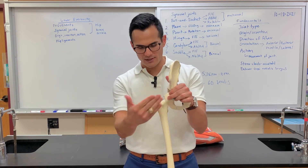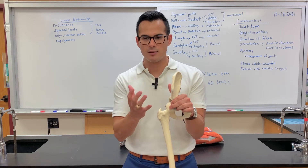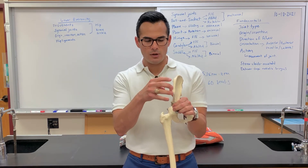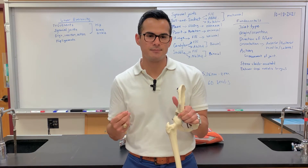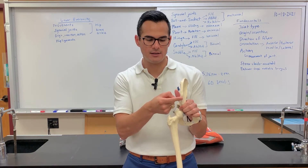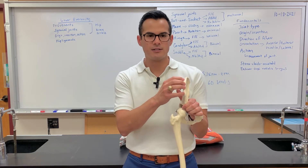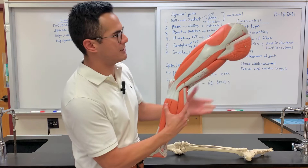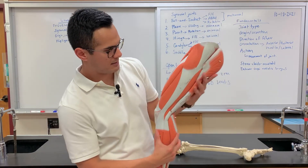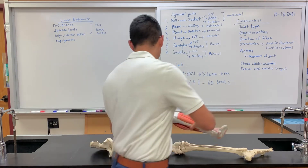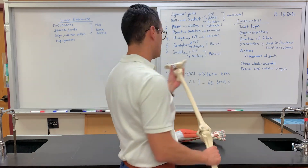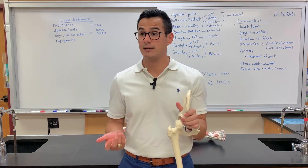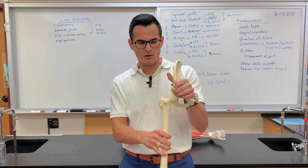Now the hip abductors, which move the leg away from midline. The TFL — tensor fasciae latae — starts at the ASIS and the anterior iliac crest and inserts on the IT band. Looking at the leg model, you can see the TFL inserting on the IT band. You also have the gluteus medius, which also helps to abduct the hip.